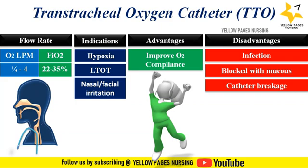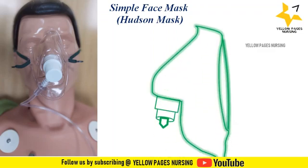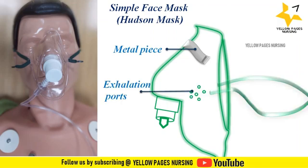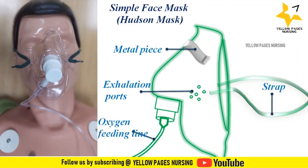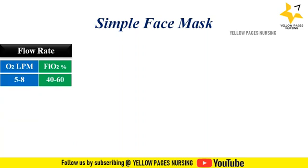Next comes the reservoir system variable performance device — first is the simple face mask, also called a Hudson mask. It is a low flow oxygen device. The mask sits on the face over the mouth and nose and has an elastic strap. Parts include a metal strip to adjust on the nasal bone, exhalation ports, an elastic strap, and an oxygen feeding line. Using a simple face mask, oxygen flow rate of about 5 to 8 liters per minute is administered, with which FiO2 of about 40 to 60% can be achieved.